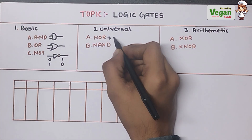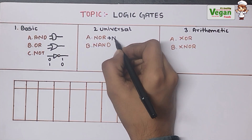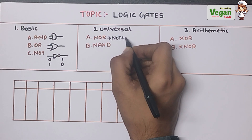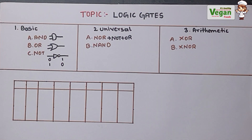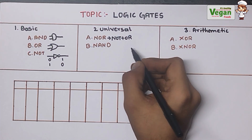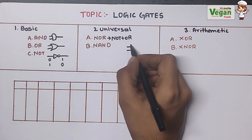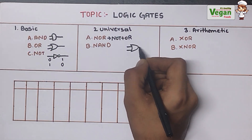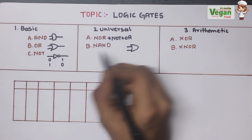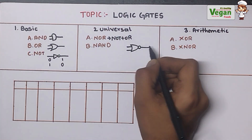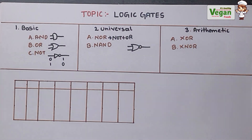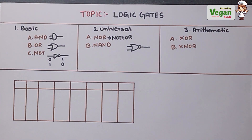Next is the NOR gate. NOR gate is the combination of NOT gate with OR gate. To represent it, we start with the OR gate and combine the NOT gate with it — this will be the representation of the NOR gate.